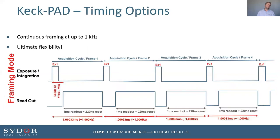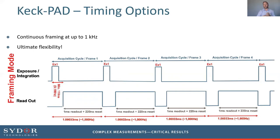The other configuration is to set the device up to continuously stream data using just one frame or one exposure. We can read out immediately after that exposure and set it up to continually frame and take measurements, as you might do in simple non-time-resolved diffraction experiments. This can still be done at reasonably fast rates, up to about a kilohertz.